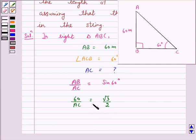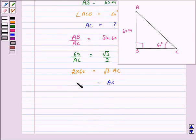On cross multiplication we have 2 times 60 is equal to root 3 AC, or AC is equal to 120 over root 3. Now multiply the numerator and denominator by root 3.